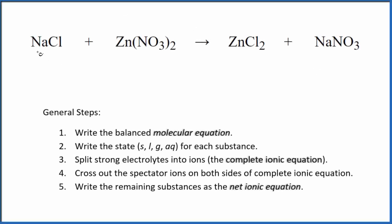Let's write the balanced net ionic equation for NaCl plus Zn(NO3)2. This is sodium chloride. This is zinc nitrate. So the first thing that we need to do with our net ionic equations, we have to balance the molecular equation.